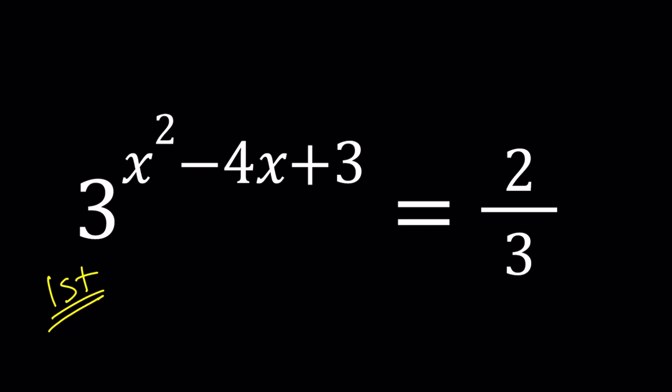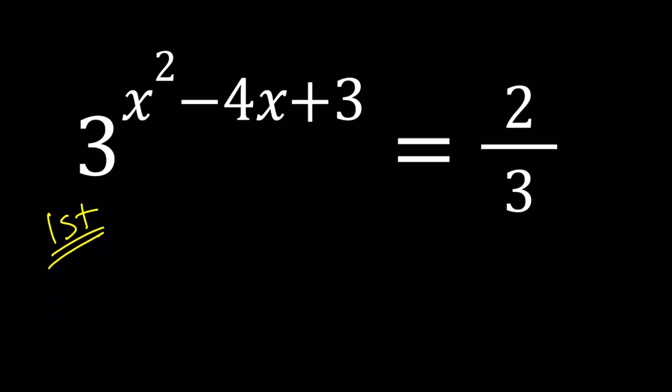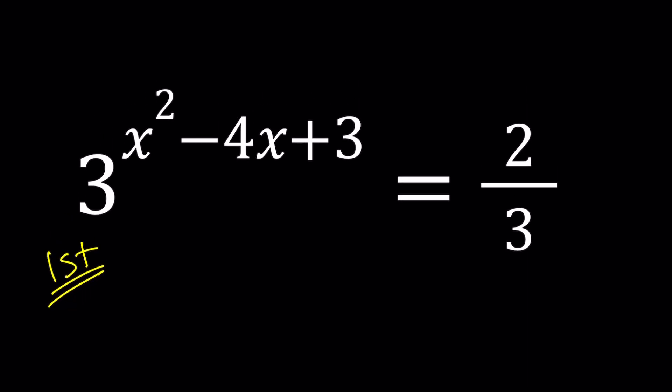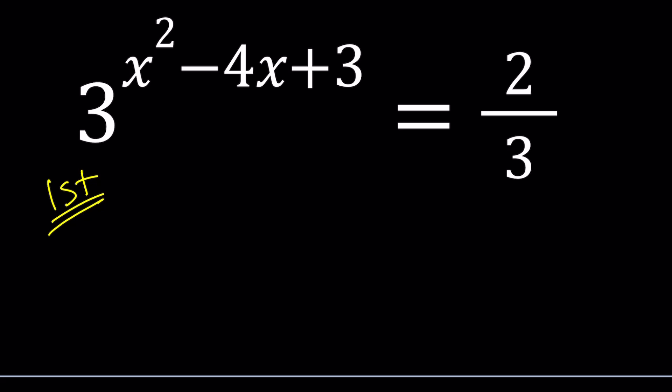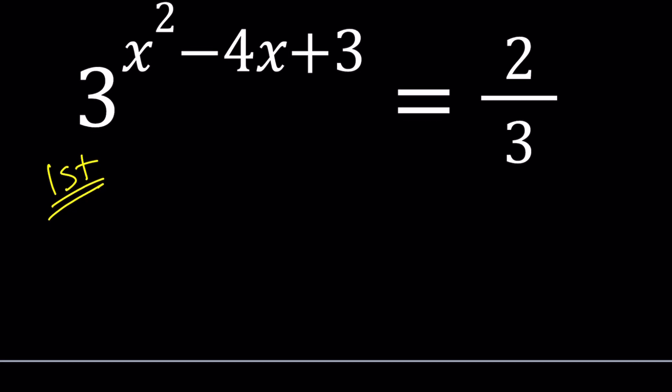We're going to go ahead and log both sides to bring the power down. You can use any base you want for the log. Using base 3 would probably make sense. Or you can use something like natural log or base 10. I'm going to go ahead and use base 10. I think last time I used ln. This time let's use log.